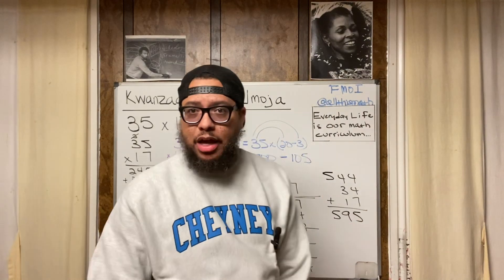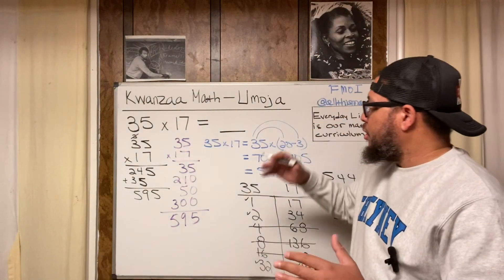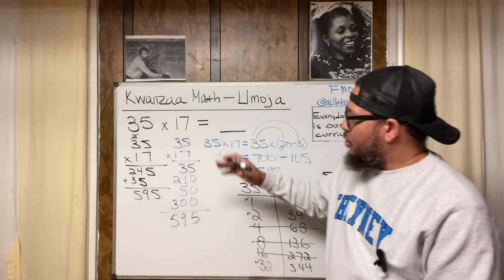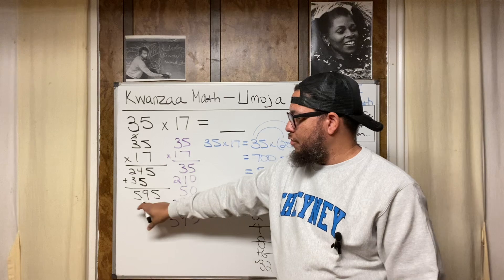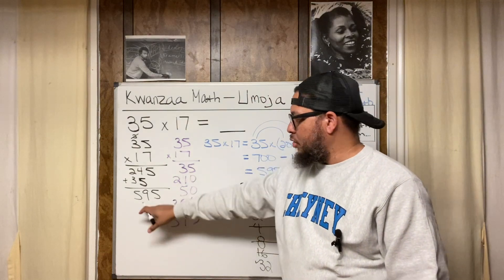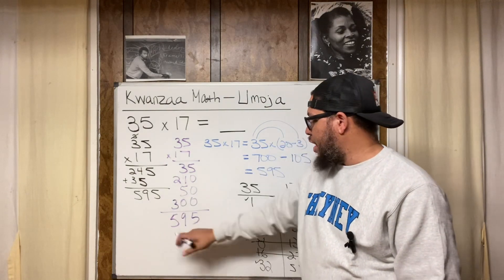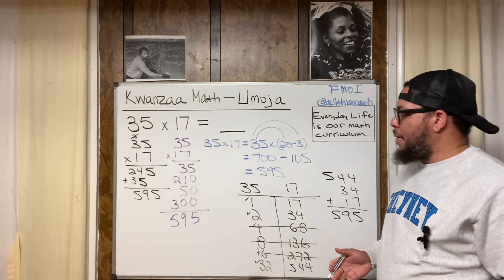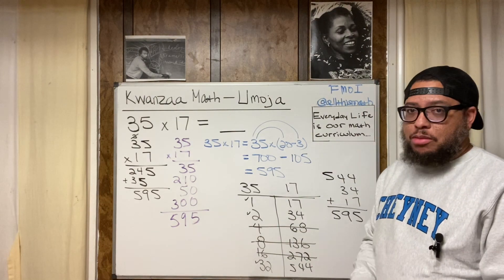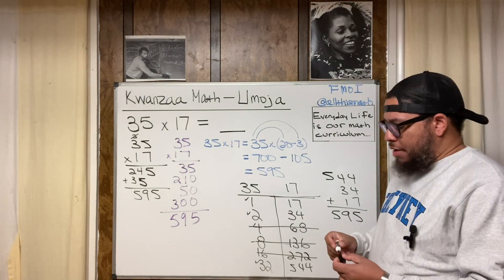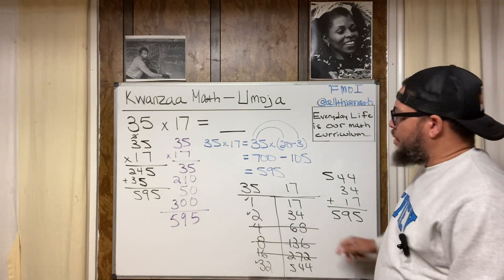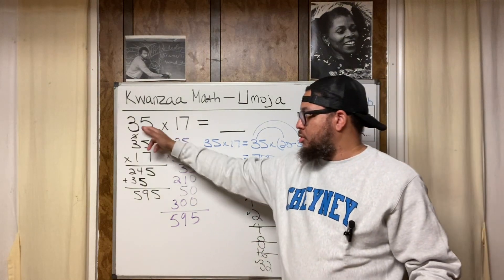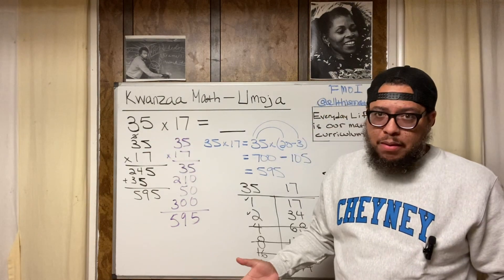Kwanzaa math, first day of Kwanzaa, Umoja, unity. We do things in different ways, but we have unity because we arrive at the same result. We got 595, 595, 595, 595, and 595 again. We keep getting 595. And there are other methods of multiplication that we can use. We still will get 595. As long as you're multiplying 35 times 17, or if you flip it using the commutative property and do 17 times 35, you still going to get 595.